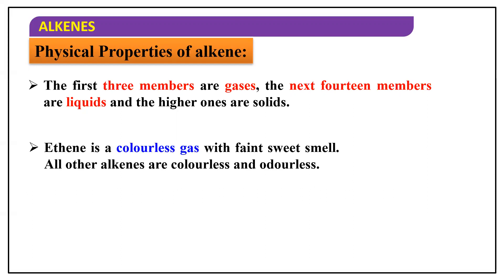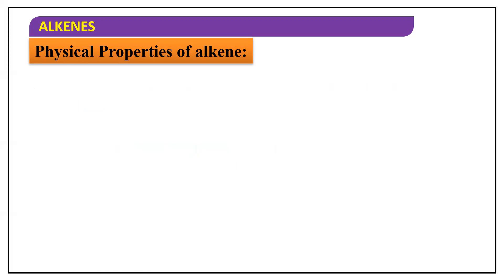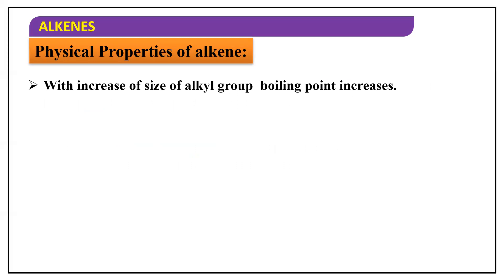Ethene is a colorless gas with a faint sweet smell. All other alkenes are colorless and odorless — it's only ethene which shows some faint smell. They are insoluble in water but fairly soluble in non-polar solvents like benzene and ether.